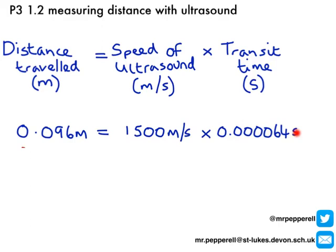I've recorded on my A-scan a transit time of 0.000064 seconds. I can multiply those two numbers together, and the product — 0.096 metres — is the distance my pulse has travelled. And 0.096 metres is the same as 9.6 centimetres or 96 millimetres, which is a reasonable distance. When doing these, think about the number you get and ask: could that number be inside of an eye?